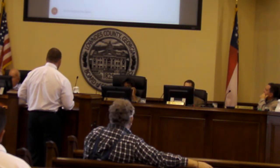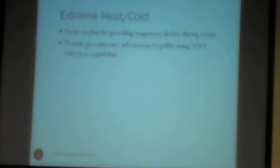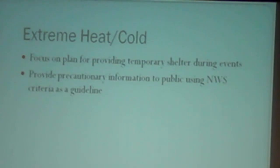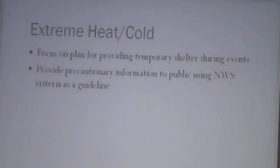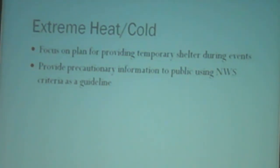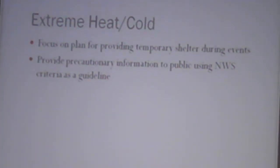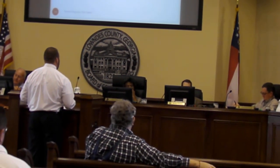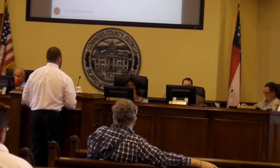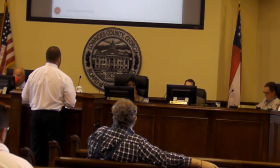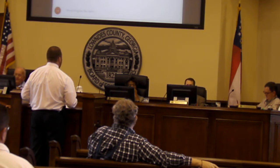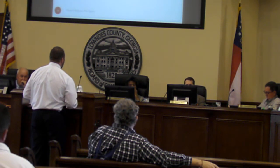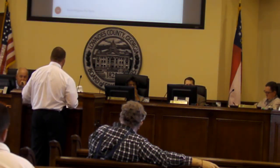For extreme heat and cold, the big focus is making sure we've got plans in place for shelter. Instead of waiting for the event to happen, making sure we're prepared to provide temporary shelter. We'll also use the National Weather Service criteria to make sure we get appropriate precautionary information out to the public when temperatures become overly excessive — either high or below normal range.